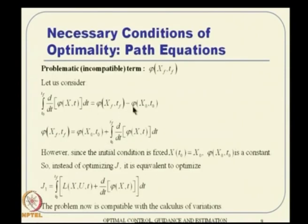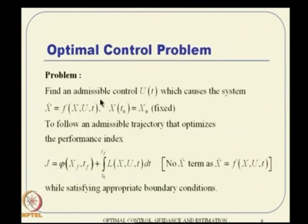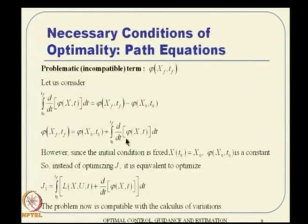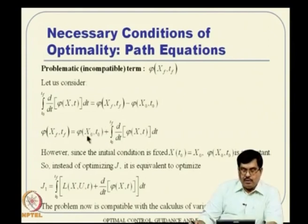One way to handle this is to consider the integral of d/dt of phi from t_0 to t_f. This evaluates to phi(t_f, x_f) minus phi(t_0, x_0). That means the terminal cost phi(t_f, x_f) can be written as phi(t_0, x_0) plus the integral of d-phi/dt.